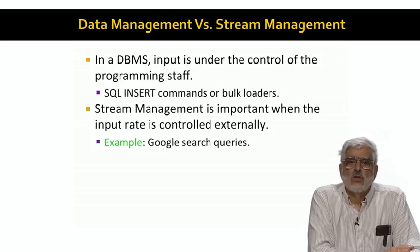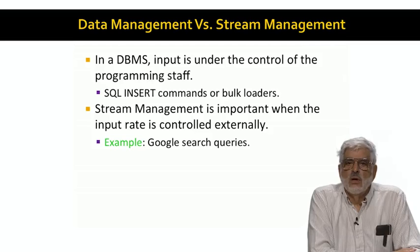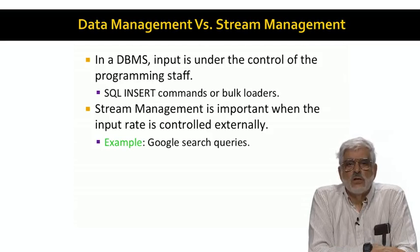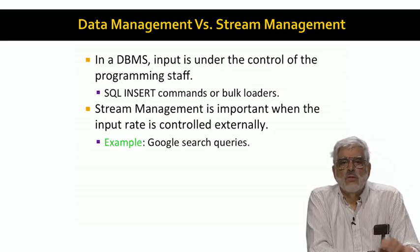You might think a transaction processing system like Walmart recording all the purchases at all its cash registers everywhere as a stream, and in a sense it is. But Walmart has a large but fixed number of registers. And checkout clerks can press the keys just so fast. So there's actually a pretty well defined limit on how fast data arrives in such a system.